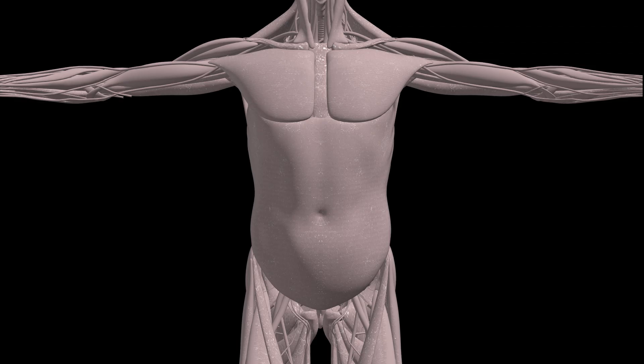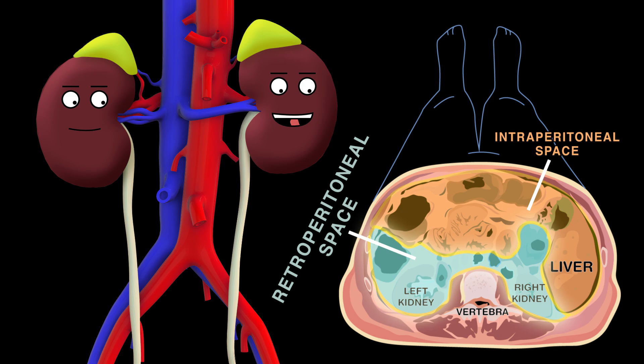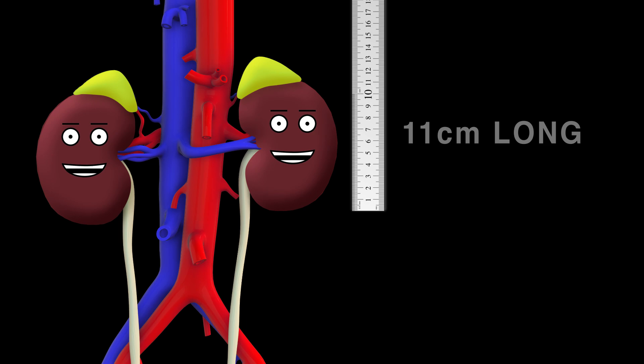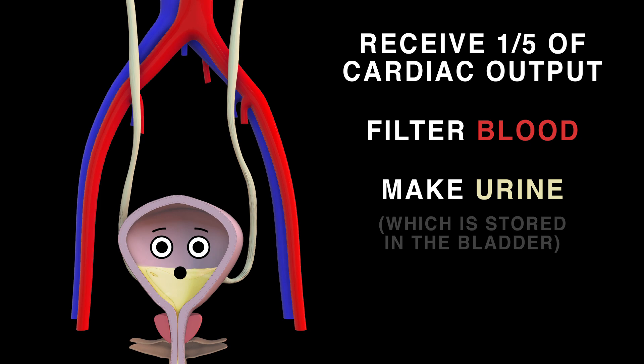We kidneys are vital organs in the retroperitoneal space. The right kidney is lower, displaced by the liver's base. Eleven centimeters long, a fifth of cardiac output we receive. We filter blood and make urine, till your bladder you relieve.